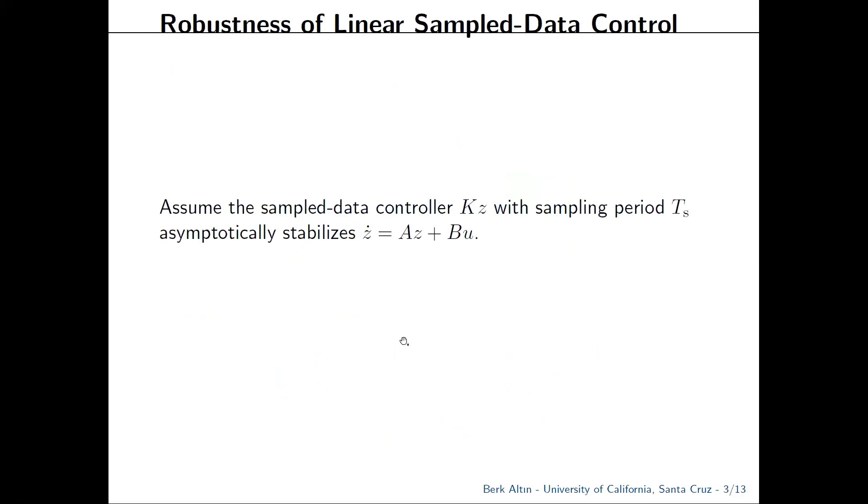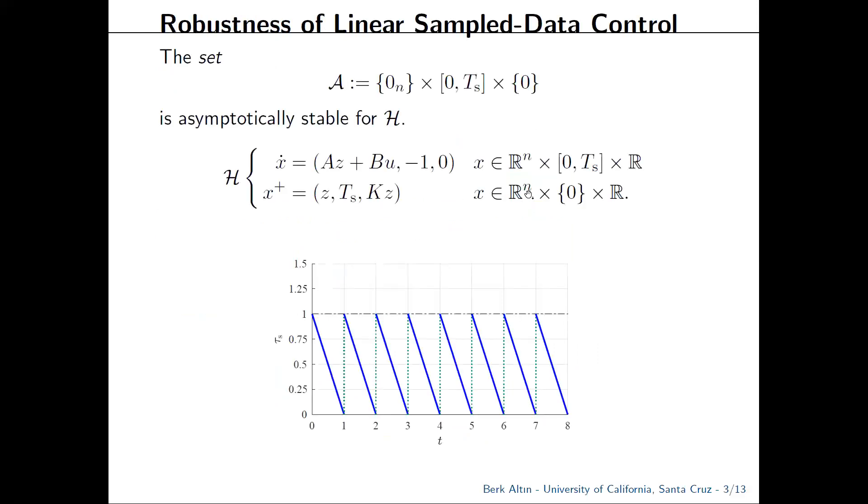An interesting feature of the sample data system is that it's robust to a wide class of perturbations. Let's suppose that our controller gain k stabilizes our continuous time plant az plus bu when implemented with a sampling period of Ts. In hybrid systems terms, this is equivalent to the set A being asymptotically stable. We require this notion of set stability to account for the sampling timer which undergoes periodic motion.